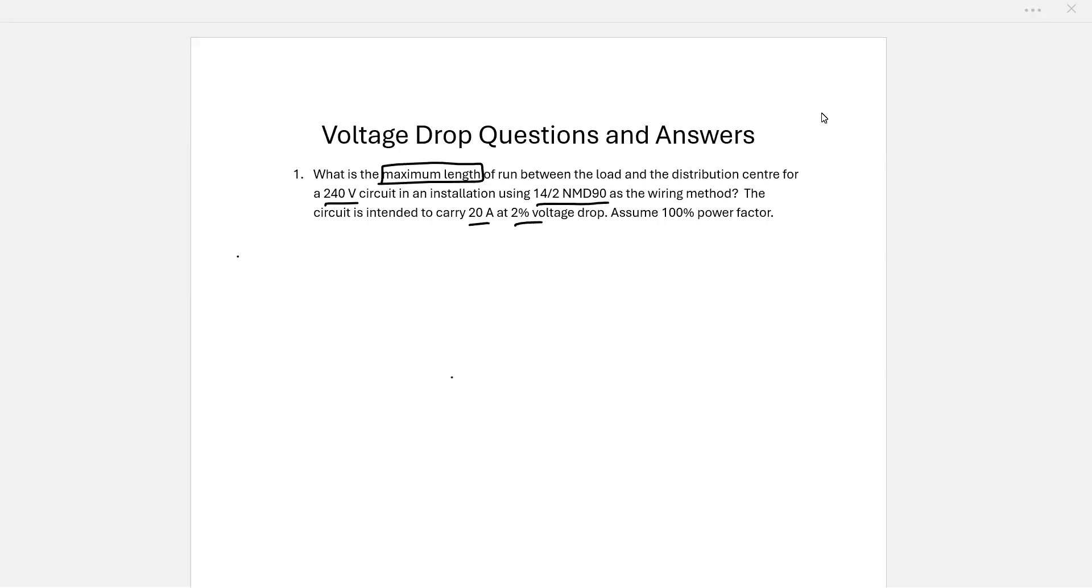Alright, this is a voltage drop question where you have to calculate the maximum length of run between the load and the distribution center for a 240 volt circuit in an installation using 14.2 NMD 90, and the circuit will carry 20 amps at 2% voltage drop.